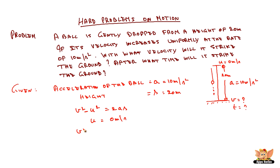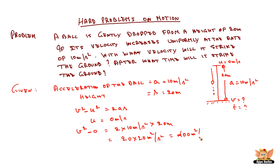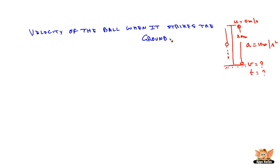We need to find v. So v squared minus 0 is equal to 2 into 10 meters per second squared into s, which is 20 meters. This becomes 20 into 20, which is 400 meters squared per second squared — that is v squared. Hence v is equal to 20 meters per second. So the velocity of the ball when it strikes the ground is 20 meters per second.